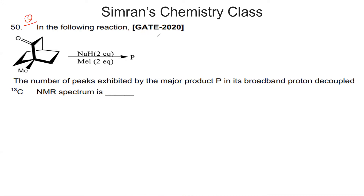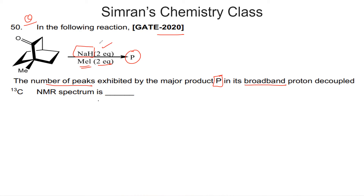The next question from GATE 2020: we have a bicyclic compound treated with two equivalents of a strong base and two equivalents of methyl iodide to give a major product P. We need to find the number of peaks exhibited by product P in its broadband proton-decoupled 13C NMR spectrum.